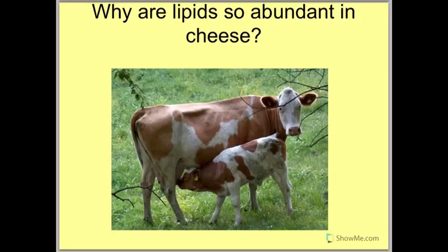So why are there so many lipids in cheese? Cheese is made of milk from various animals like cows, goats, or sheep. Milk is meant to feed the animals and give them everything they need to grow. In the process of making cheese, organic molecules such as lipids and proteins are concentrated into a solid form that contains a high amount of both lipids and proteins.